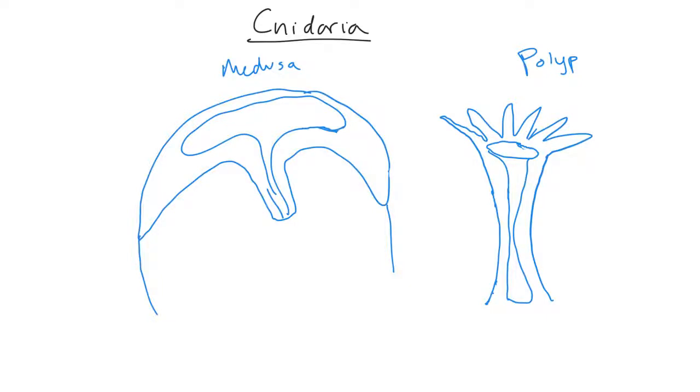Our cnidarians then are in the eumetazoa. Everything else is in eumetazoa, but this is the basal group within eumetazoa. They do have true tissues. They are diploblastic, so they only have two embryonic germ layers which become the tissues in their body. There are two different body forms in cnidarians. They can be a medusa, which is the free-floating life form. These are your jellyfish, floating around in the ocean.